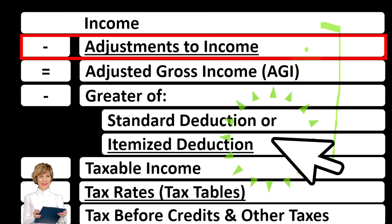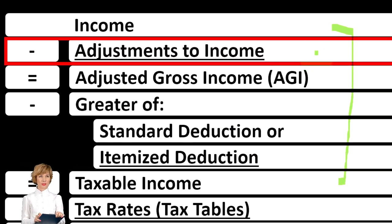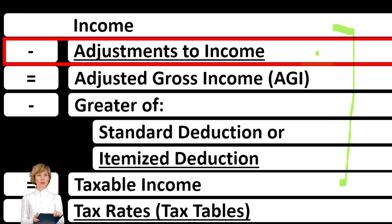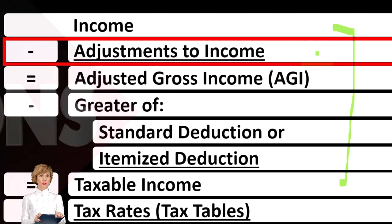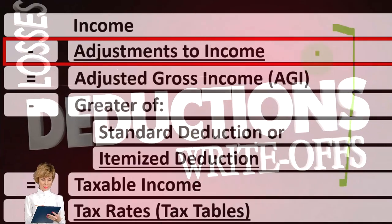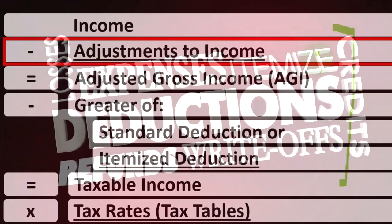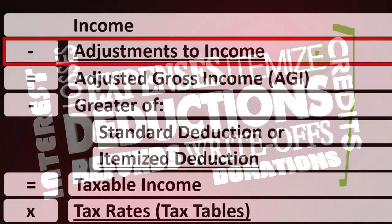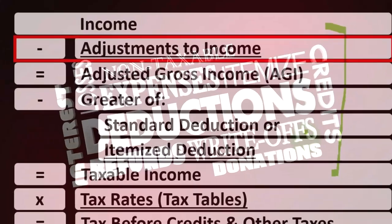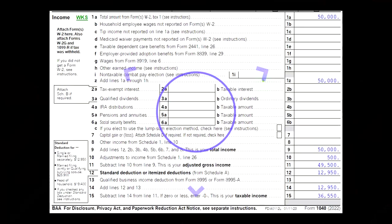Also note that this line might be called above-the-line deductions, or Schedule 1 deductions. They also are not limited — you don't have to clear the hurdle of the standard deduction before you can take these above-the-line adjustments to income.